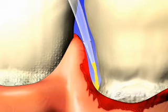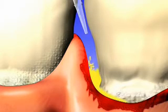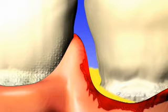Once Arestin is inserted, it immediately adheres to the periodontal pocket and tooth surface where the pathogens associated with periodontal disease reside.